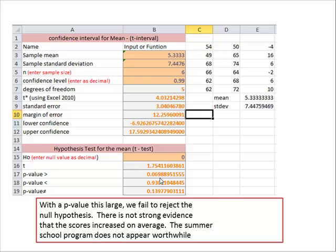With a p-value this large, we fail to reject the null hypothesis. There's not strong evidence that the scores increased on average. The summer school program does not appear to be worthwhile, and this is kind of supported with the fact that 0 is in this confidence interval, and whenever 0 is in your confidence interval, that indicates there's not a difference from, in this case, the null value of 0. Now, I would be careful here. We didn't have a very big sample size, so you don't want to totally disappoint the school system because they thought this program would be worthwhile. It may be, they need a bigger population to see if it was really effective.